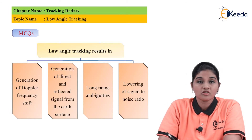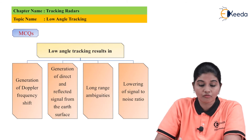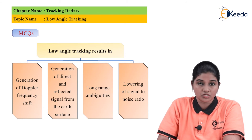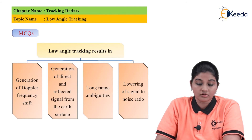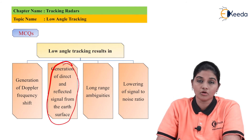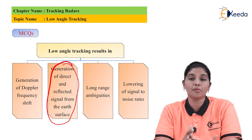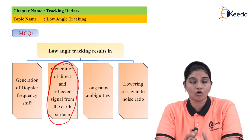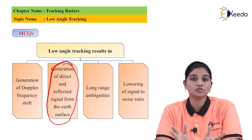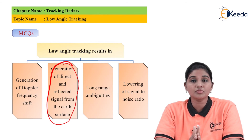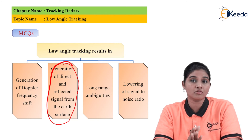MCQ 1: Low angle tracking results in — options are: generation of Doppler frequency shift; generation of direct and reflective signal from earth's surface; long range ambiguity; and lowering of signal-to-noise ratio. The answer is: generation of direct and reflected signal from the earth's surface. The signal reflected from the earth's surface also takes longer to travel compared to the directly reflected signal, making it possible to differentiate between the two.